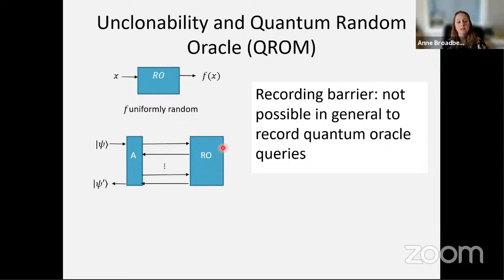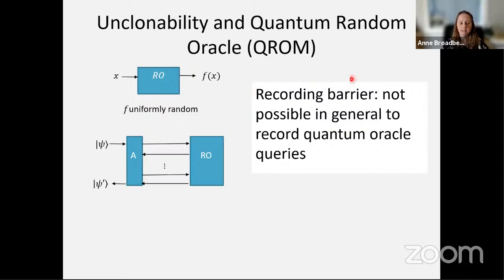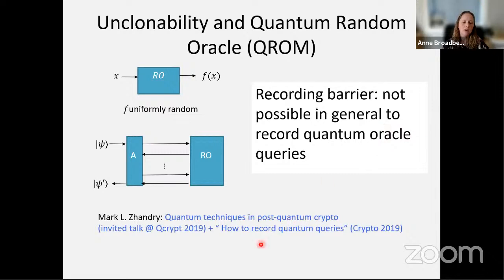There's something called the recording barrier: similar to the transcript case, it's not possible in general to record quantum oracle queries. So it's not possible to take a snapshot of each input state to the random oracle and later analyze those oracle calls. There have been techniques developed to nevertheless get some of the power of recording, and these are applicable to the quantum random oracle model.